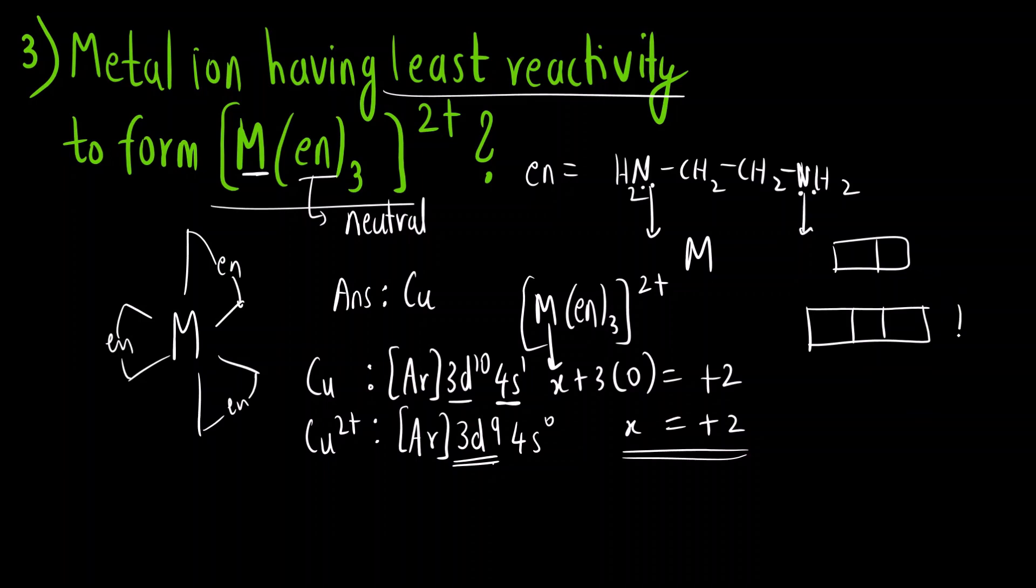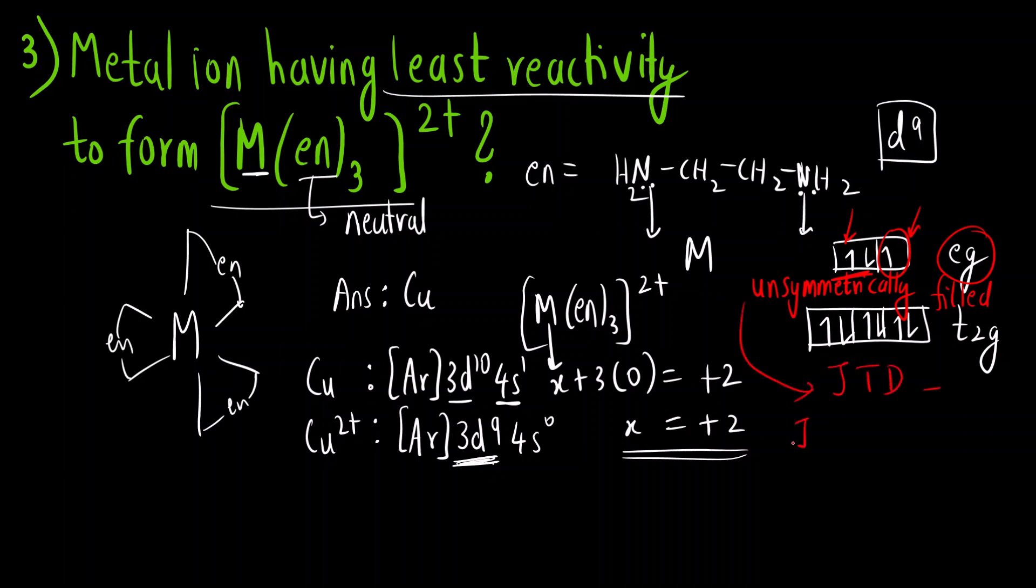So 3d⁹ let us write down the electronic configuration for 3d⁹. Octahedral complex splits into two levels lower energy t₂g and higher energy eg level and what we have to fill we have to fill d⁹. EN is a strong ligand but in d⁹ it does not matter whether ligand is strong or weak, electron configuration will be same 1, 2, 3, 4, 5, 6, 7, 8, 9.